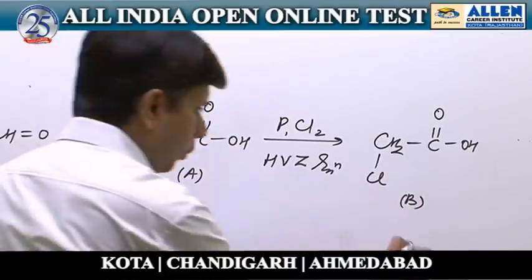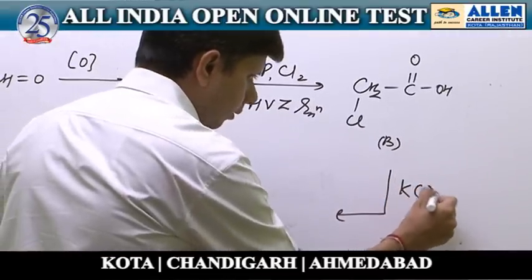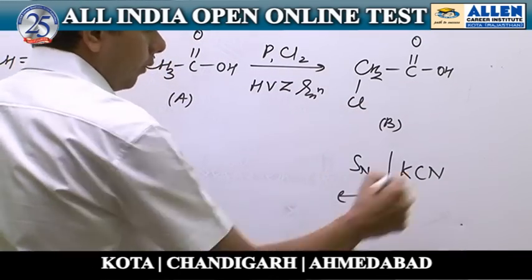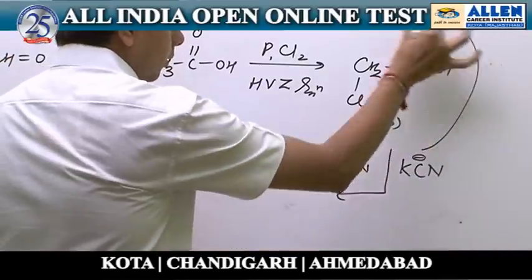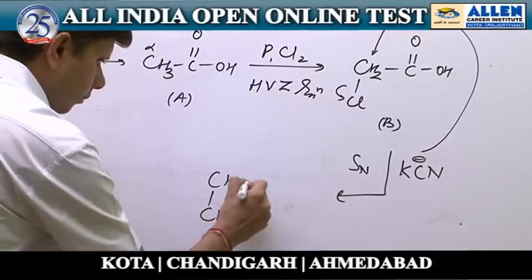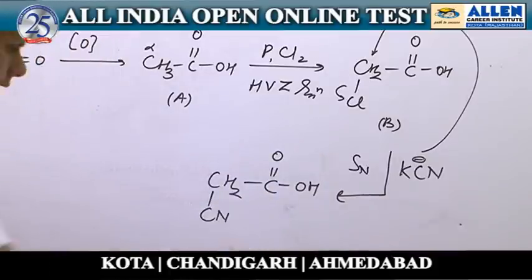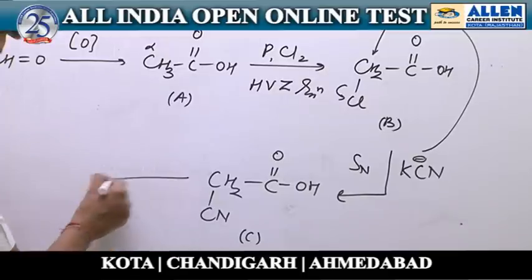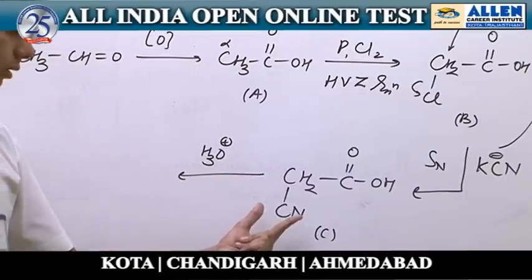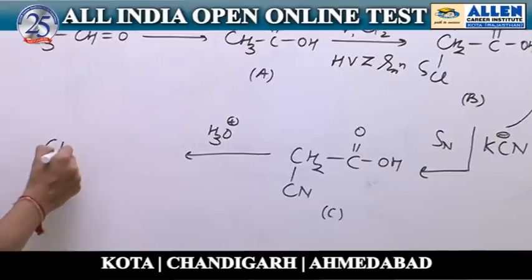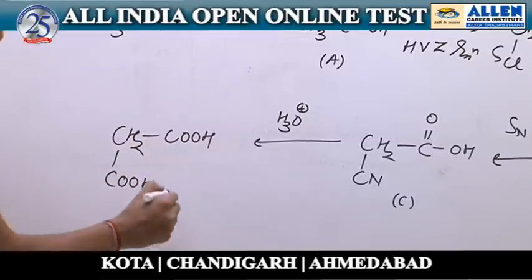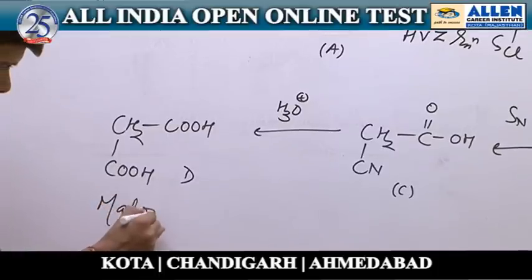Next, compound B is to be reacted with potassium cyanide to get compound C. The reaction of this halide with potassium cyanide will be a nucleophilic substitution reaction in which cyanide will attack as a nucleophile to replace chlorine to give this compound as product C. Acidic hydrolysis of this compound is then carried out. As we know, acidic hydrolysis of a cyanide gives an acid, so the cyanide group gets converted into a carboxylic acid group to give this compound as product D.